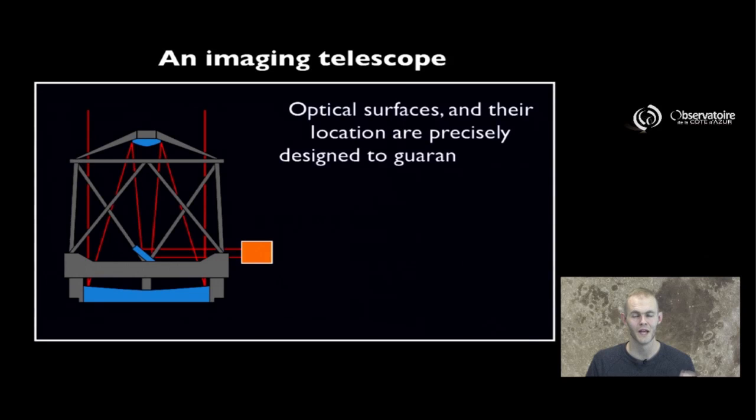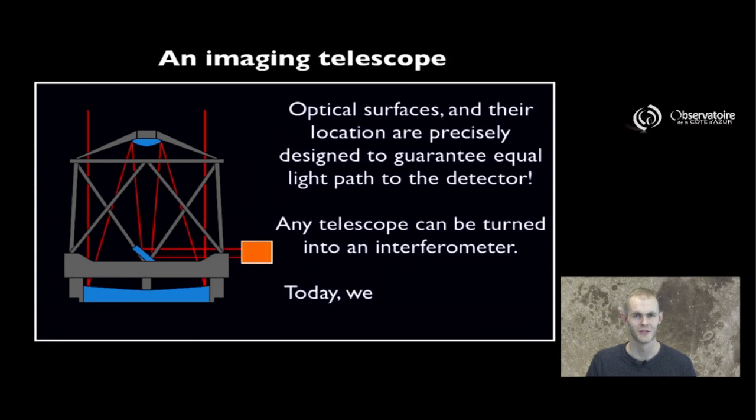Luckily, we have systems that are precisely designed to guarantee that the light path is going to be equal no matter what the location of the star in our field. And that system happens to be what we call an imaging system or in astronomy, an imaging telescope.